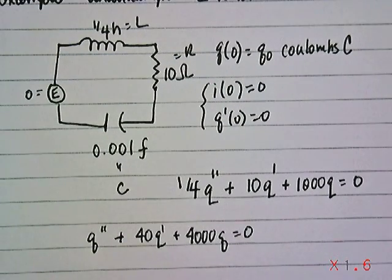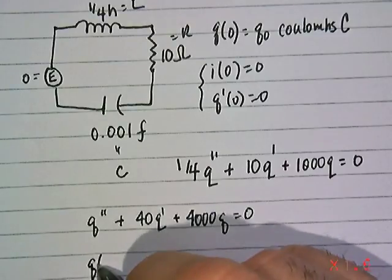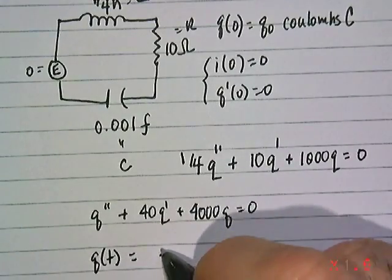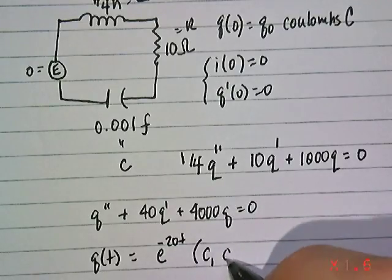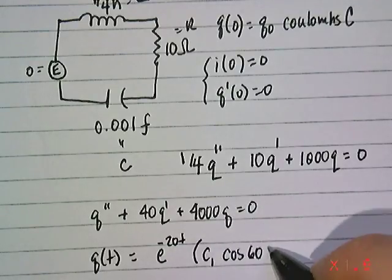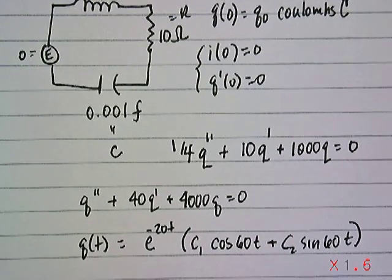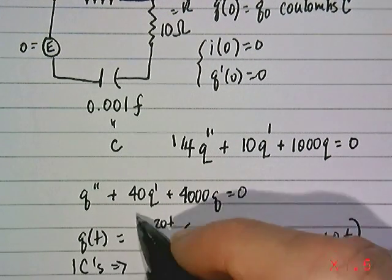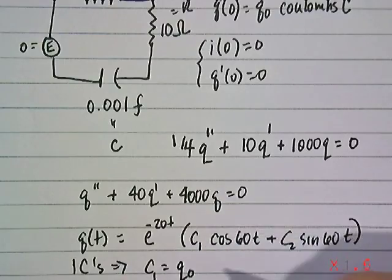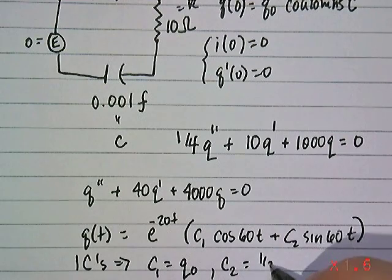And if we were to solve that second-order equation, we would see we would get complex roots. And it turns out the charge equation will look like something like this: e to the minus 20t times C1 cosine of 60t plus C2 times sine of 60t. So it's definitely underdamped, like we saw with the mass-spring system.